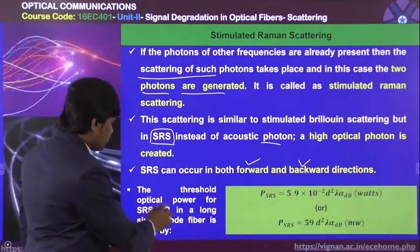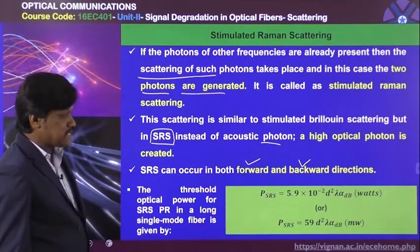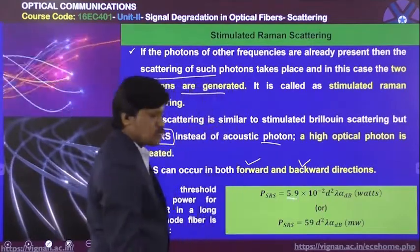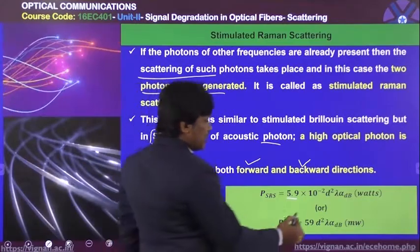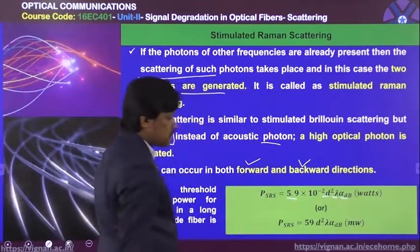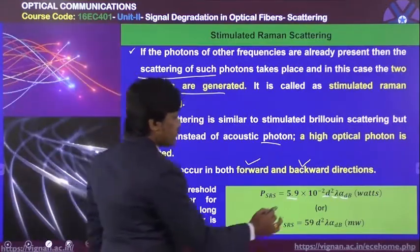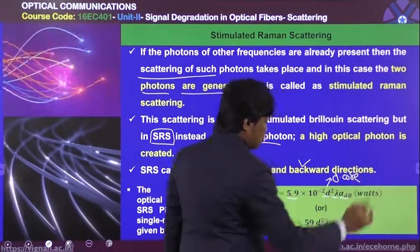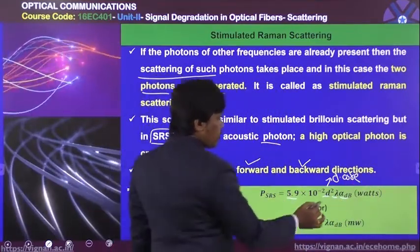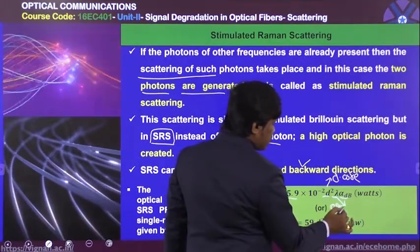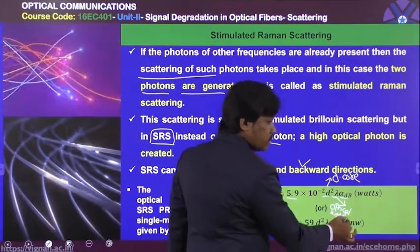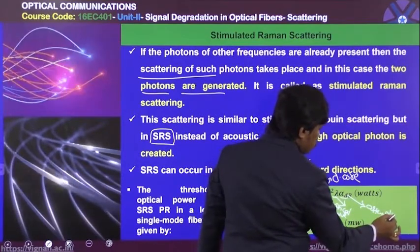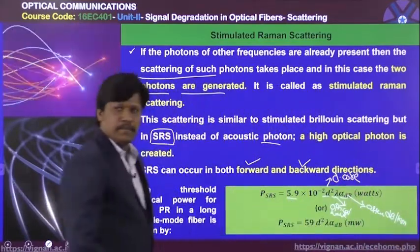The threshold optical power for SRS in a long single-mode fiber is: P_SRS = 5.9 × 10⁻² × D² × λ × α_dB, where D is the diameter of the core, λ is the optical wavelength, and α_dB is the attenuation in dB per kilometer.